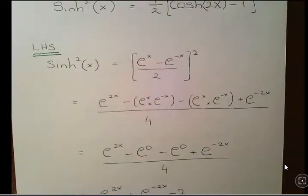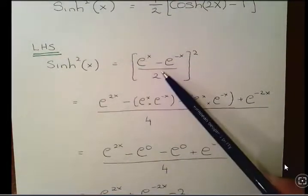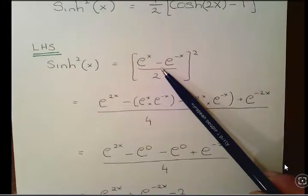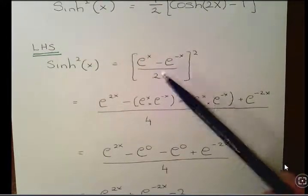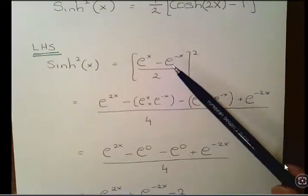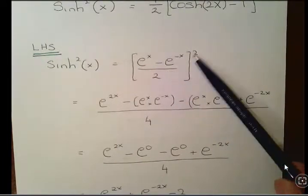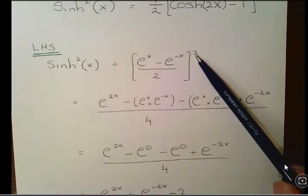What I'm going to do here is start with the left-hand side. When we use the exponential function, this is what shine is: (e^x - e^(-x))/2. And we square it because it's sinh(x) squared, so we're just going to square that.